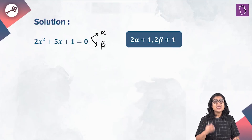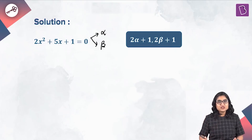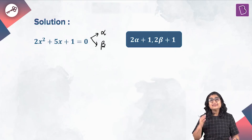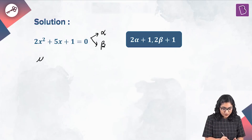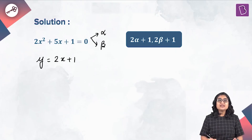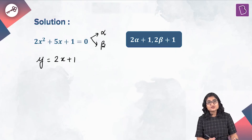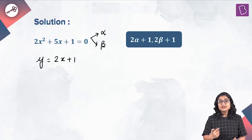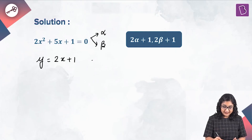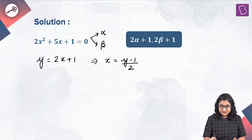The same transformation is being applied to both alpha and beta. So what we are going to do is apply that same transformation to x, and we will get y equal to 2x plus 1. We have y in terms of x, so next we calculate x in terms of y, and we will get x equal to y minus 1 divided by 2.